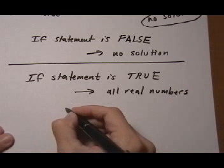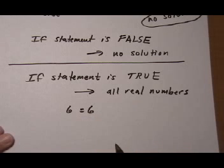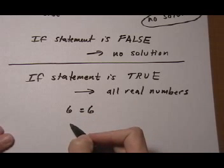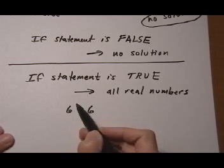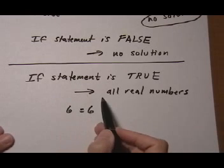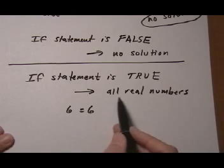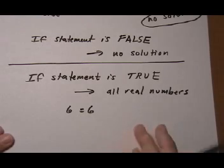Then what you want to conclude is that all real numbers will work. And for example, let's say we ended up with 6 equals 6 as a statement. Well, 6 will always equal 6. No matter what we put in for the equation that came above it and led to 6 equals 6, the x's will cancel out. Any x value will cancel out. And we'll always get 6 equals 6, which is true. So all real numbers would be the solution in that case.